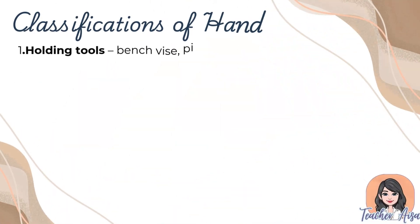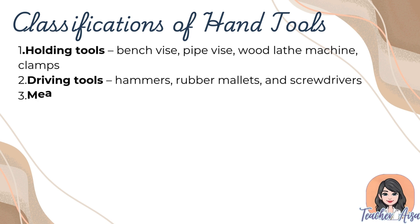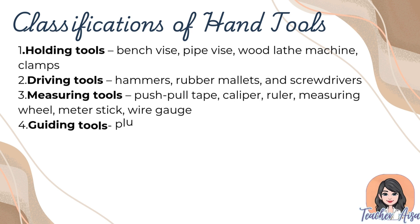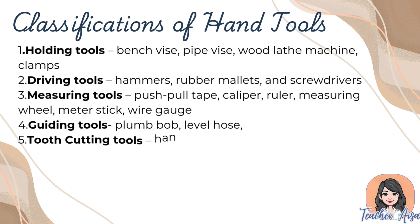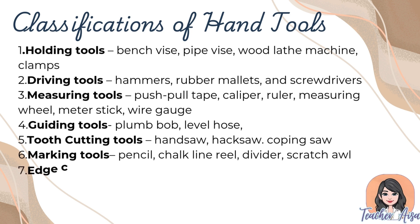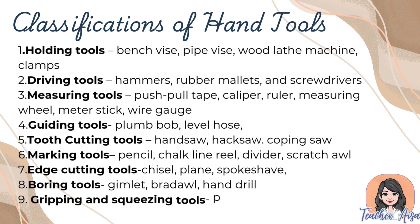Hand tools are classified as: one, holding tools — bench vise, pipe vise, wood lathe machine clamps; two, driving tools — hammers, rubber mallets, and screwdrivers; three, measuring tools — push-pull tape, caliper, ruler, measuring wheel, meter stick, wire gauge; four, guiding tools — plumb bob, level, hose; five, tooth cutting tools — handsaw, hacksaw, coping saw; six, marking tools — pencil, chalk line reel, divider, scratch awl; seven, edge cutting tools — chisel, plane, spoke shave; eight, boring tools — gimlet, brace awl, hand drill; nine, gripping and squeezing tools — pliers, vise grip, wrenches.